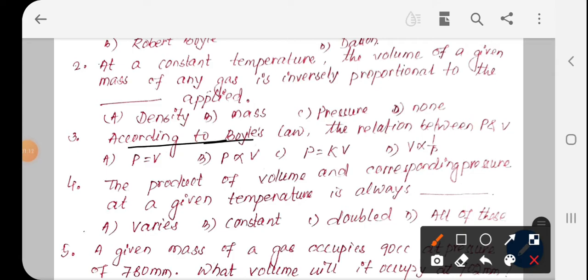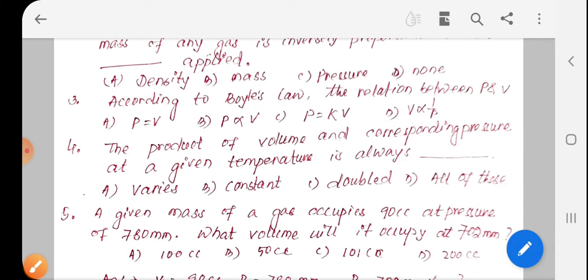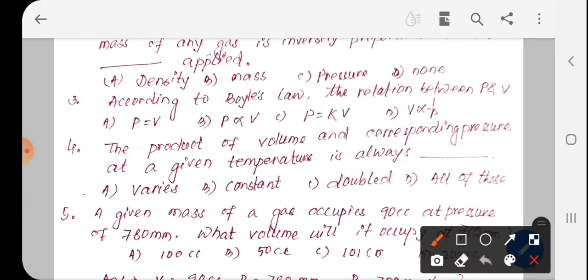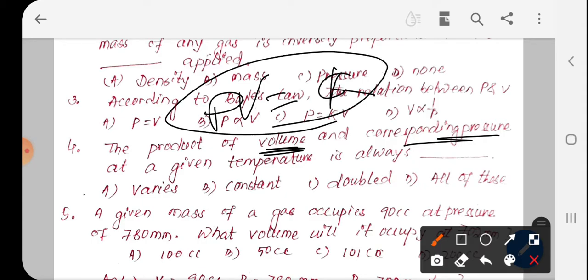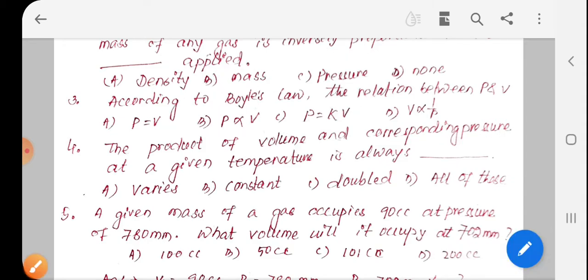According to Boyle's Law, the relation is P times V. The product of volume and corresponding pressure, P into V, equals constant k. According to Boyle's Law, P into V equals constant. Option number one is correct.